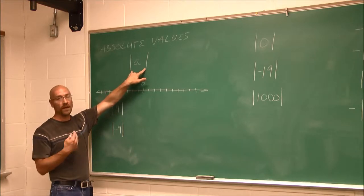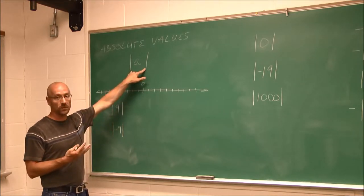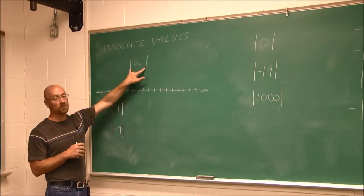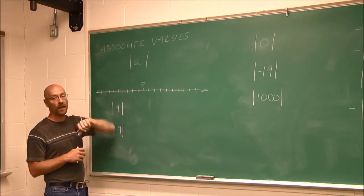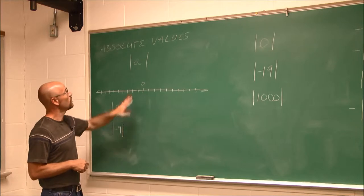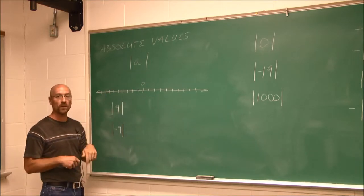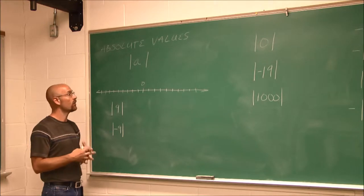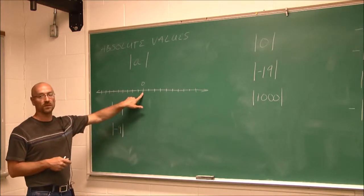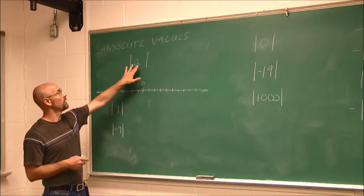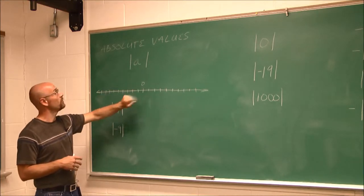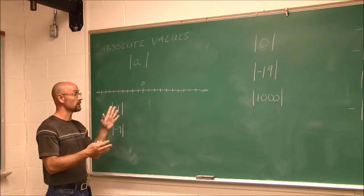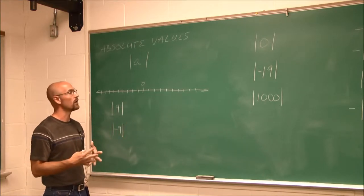When I introduced grouping symbols for parentheses in order of operations, I had mentioned briefly about absolute values being a grouping symbol. They're a special type of grouping symbol. What they ask us to find is a distance — how far from the reference point of 0. It's not asking is it to the right or to the left of 0; it's asking how far.